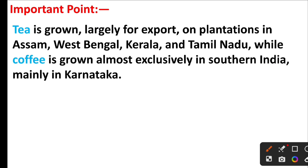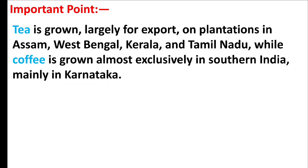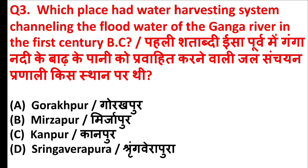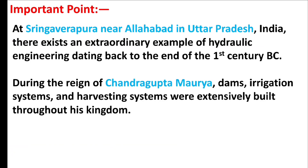The President is called the first citizen of India. In India, cultivation of which of the following crops is almost exclusively concentrated in the southern states? The right answer is option A — Coffee. Tea is grown largely for export on plantations in Assam, West Bengal, Kerala, and Tamil Nadu, while coffee is grown almost exclusively in southern India, mainly in Karnataka.